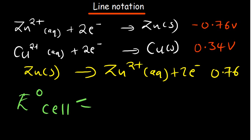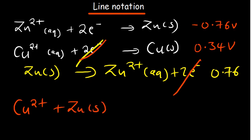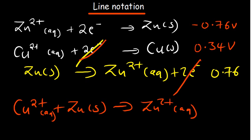As things stand, our standard cell potential is the addition of 0.34 plus 0.76, which gives us a standard cell potential of 1.1 volts at 1 molar concentration and 25 degrees Celsius (298 Kelvin). Now to construct this reaction into line notation: we combine the two half reactions by cancelling the electrons on opposite sides, giving us Cu²⁺(aq) + Zn(s) → Zn²⁺(aq) + Cu(s).